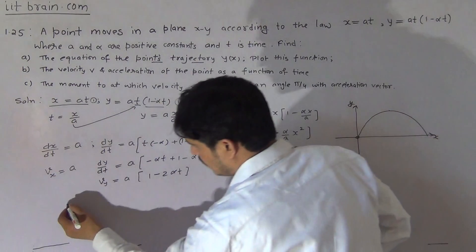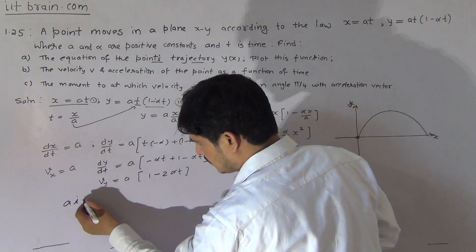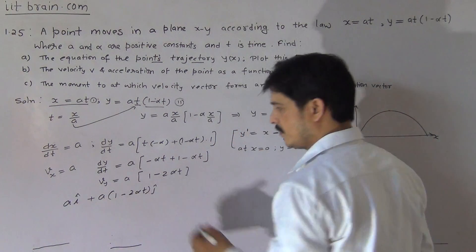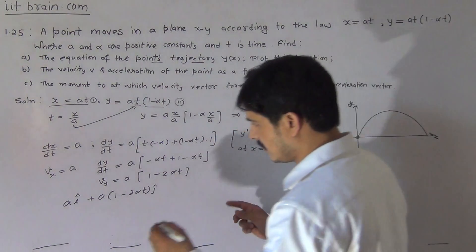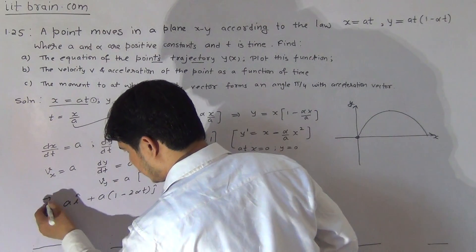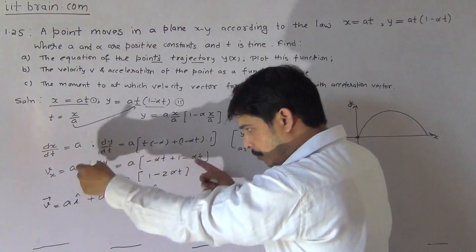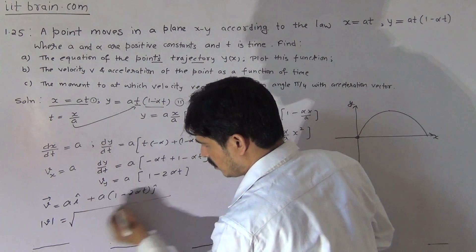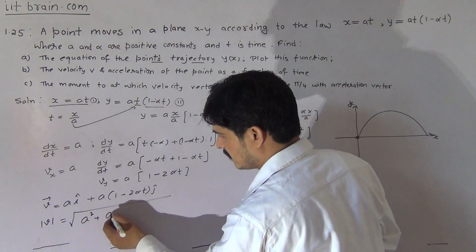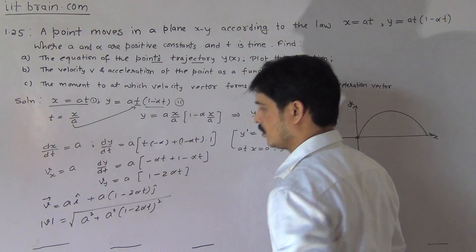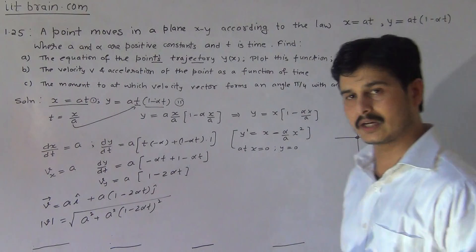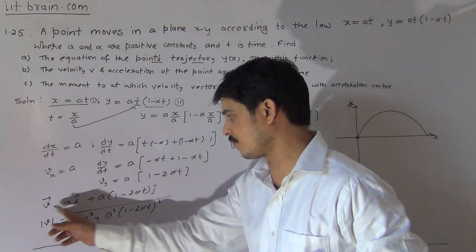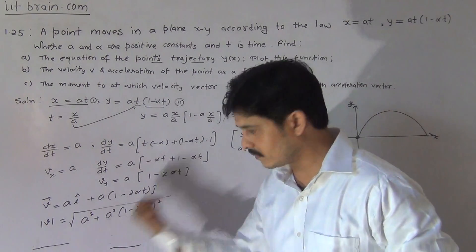The velocity of the particle is: v equal to a·i plus a(1 minus 2 alpha t)·j, where i and j are unit vectors along the x and y axes respectively. For getting the magnitude of this velocity vector, we take the modulus: the magnitude of velocity equals the square root of a squared plus a squared(1 minus 2 alpha t) squared. This is the velocity vector and its magnitude.